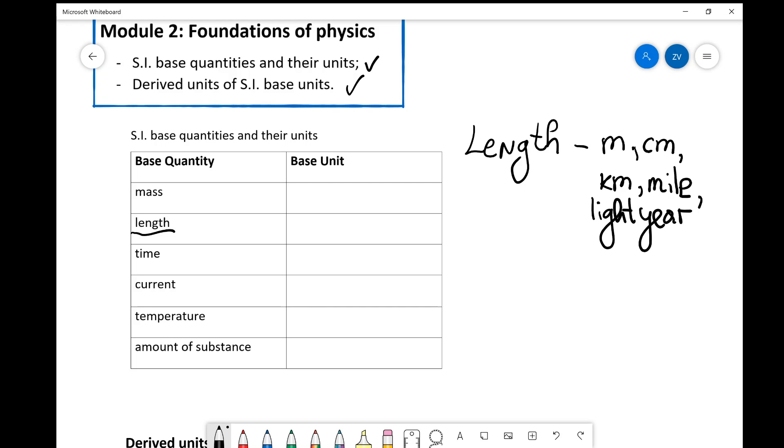There are many different measurements for the same quantity. Now what's special about base units and base quantities is that they cannot be expressed in terms of each other. They are fundamental. You can think of them as the lego building blocks, the fundamental bits of all the units.